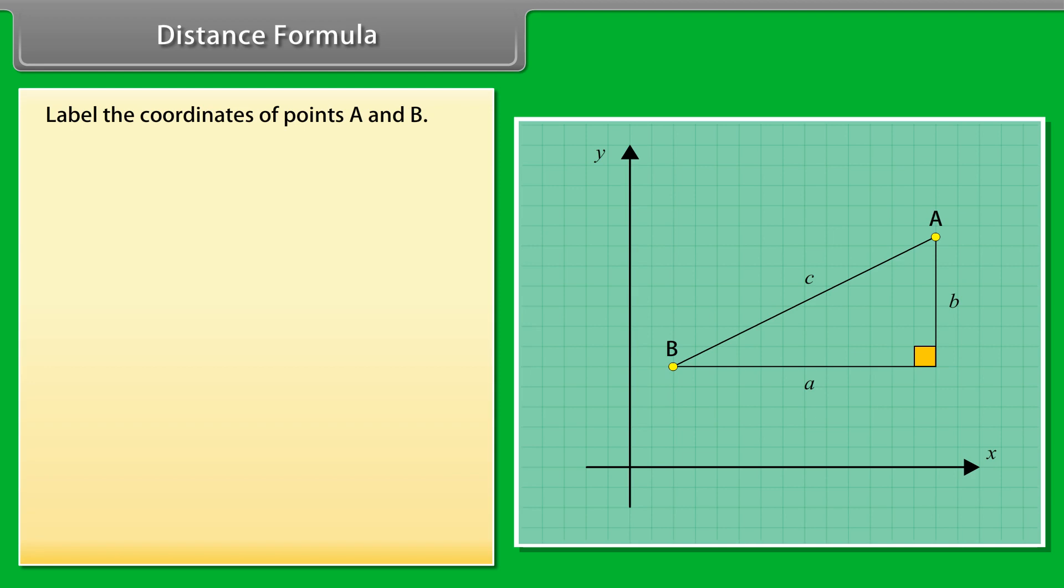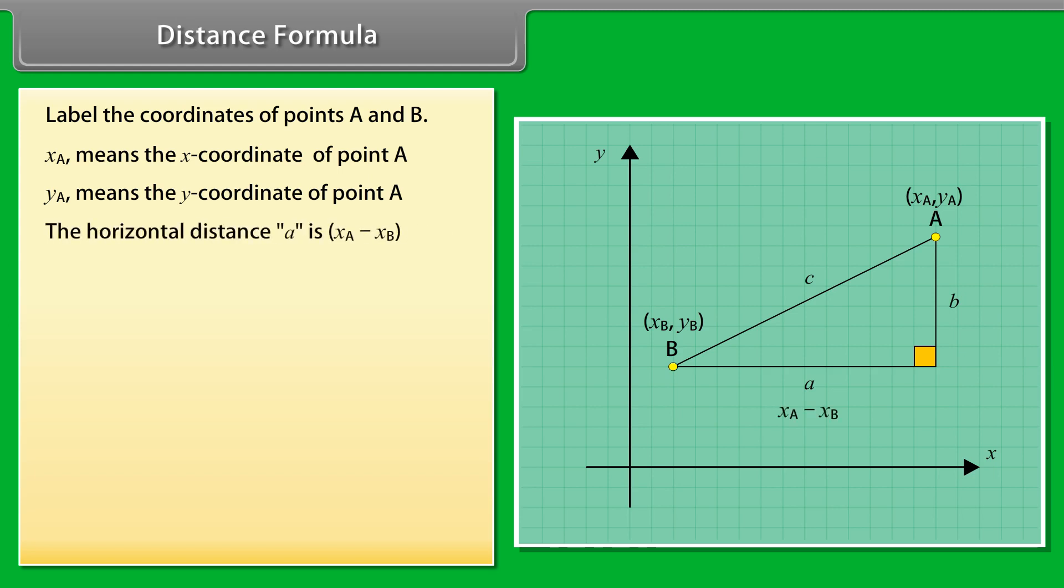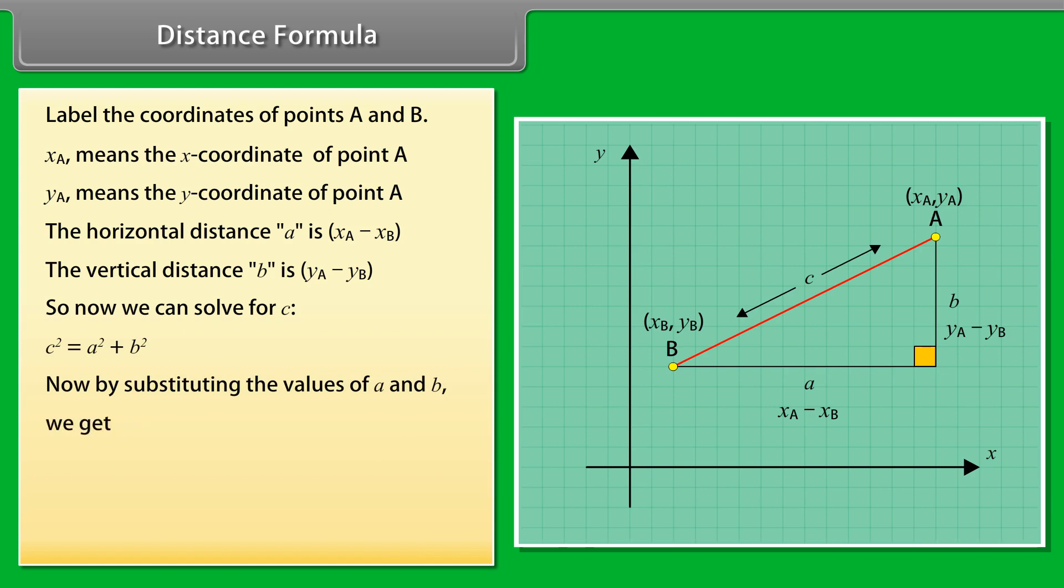Now label the coordinates of points A and B. XA means the x-coordinate of point A. YA means the y-coordinate of point A. The horizontal distance A is XA minus XB. The vertical distance B is YA minus YB. So now we can solve for C which is the distance between the points. C square is equal to A square plus B square. Now by substituting the values of A and B, we get C square is equal to XA minus XB whole square plus YA minus YB whole square. The final result is C is equal to under root of XA minus XB whole square plus YA minus YB whole square.